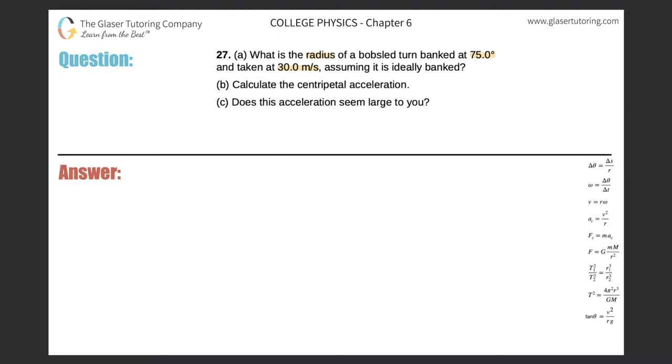Alright, so this sounds like we've got to use the ideal banking equation down here on the right-hand side, which says that the tangent of the ideal banking angle will be equal to the linear velocity squared divided by the radius of curvature multiplied by g. Now, what are we asked to find? We're asked to find the radius. So let's just solve this thing for r.